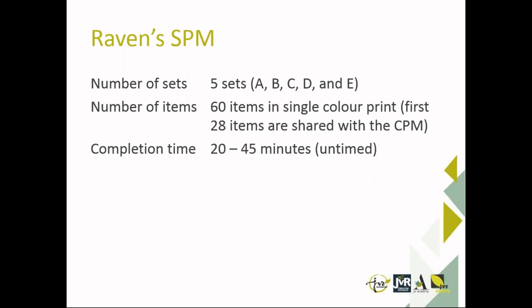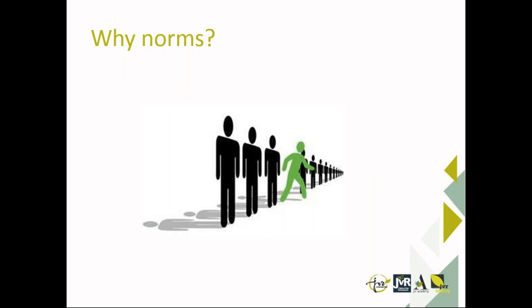The first 28 items of the 60 items are shared with the Ravens Colour Progressive Matrices, but printed in single colour. It generally takes participants about 20 to 45 minutes to complete this test, but it is an untimed assessment.